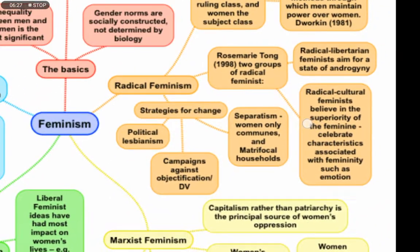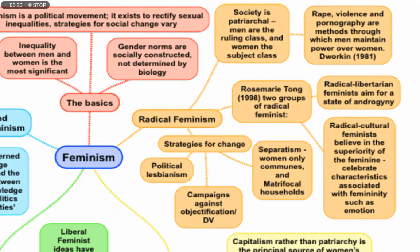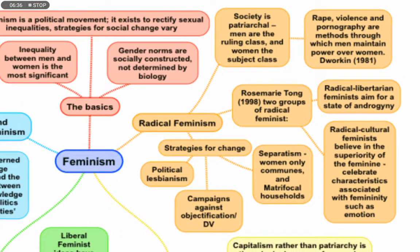Talking about radical feminists — their beliefs are diametrically opposed to liberal feminists. Radical feminists believe that society is patriarchal, meaning that men are the ruling class and women are the subject class. A very famous radical feminist, Dworkin, maintained in her 1981 work that rape, violence, and pornography are the methods through which men maintain power over women.